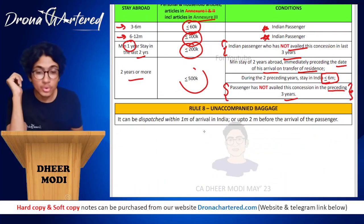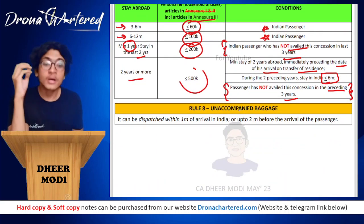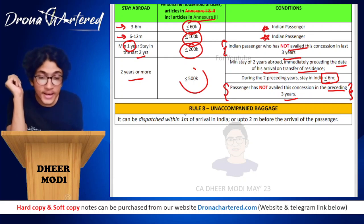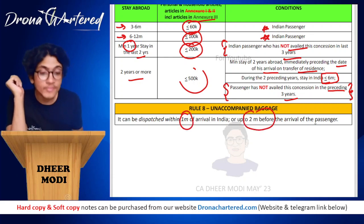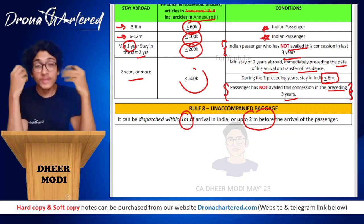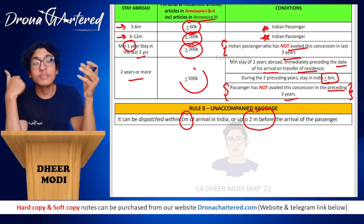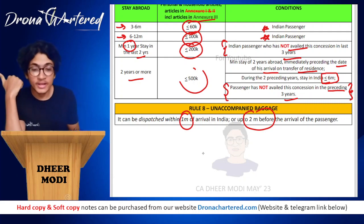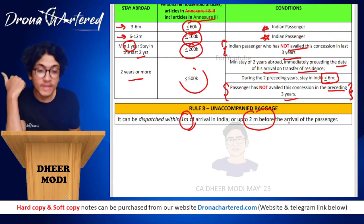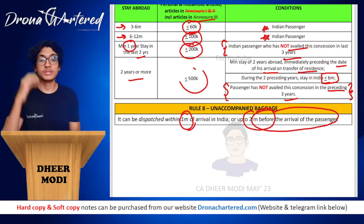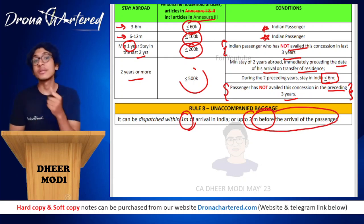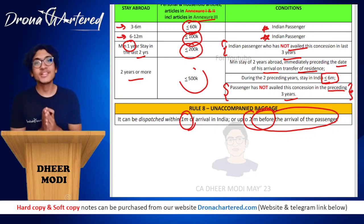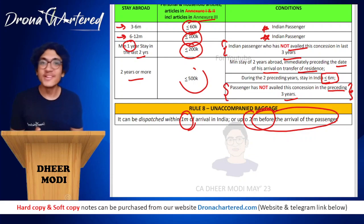The last part of this chapter is Rule 8, covering unaccompanied baggage. Unaccompanied baggage can be dispatched within one month of arrival in India, or up to two months before the arrival of the passenger. It is called unaccompanied baggage because your baggage has reached but you have not. With this, we are done with the chapter on baggage.